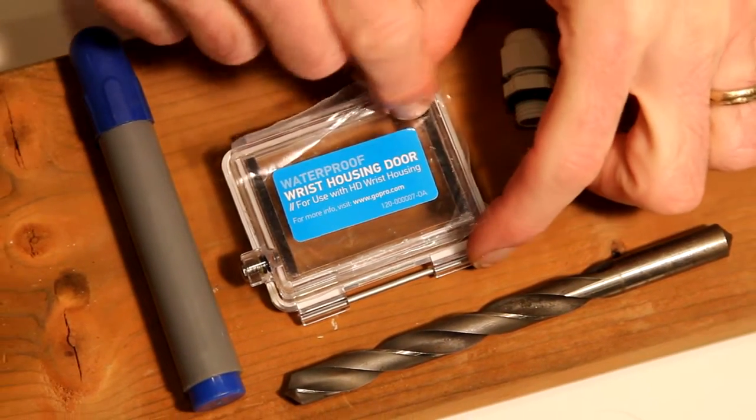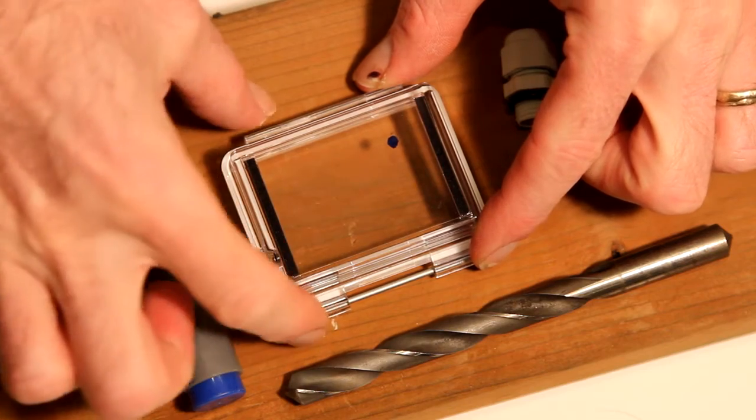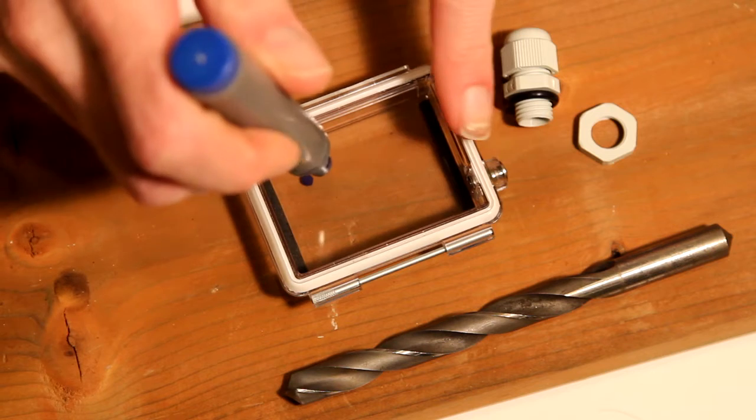Here I'm using a wrist housing backpack door from the LCD kit. The LCD backpack is a great kit to buy because it comes with four backpack doors. Two of them are waterproof, and I'm using one of them here.